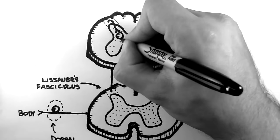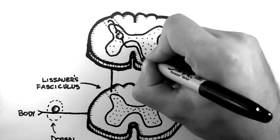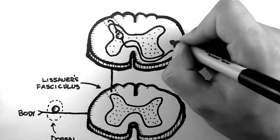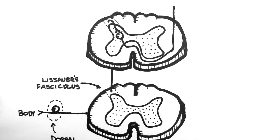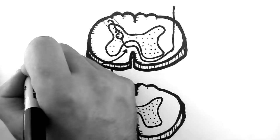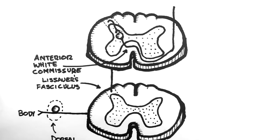The axon from this neuron then decussates, which you'll remember means to cross to the other side, and then ascends via the spinothalamic fasciculus. This decussation is called the anterior white commissure. It is also important in the corticospinal tract, which we will discuss in the next tutorial.